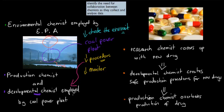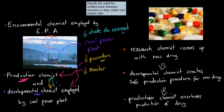Once the procedure is in place, another chemist is needed to monitor everything — that's the production chemist, who supervises the production of power from coal. If there's a problem, the production chemist notifies the developmental chemist. They need to communicate consistently: the production chemist shares any issues, and the developmental chemist explains the ins and outs of the procedure so the production chemist can control it properly.